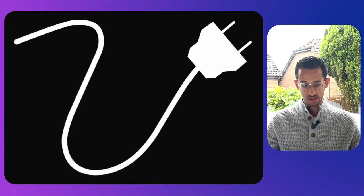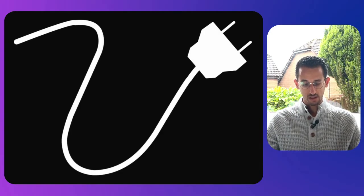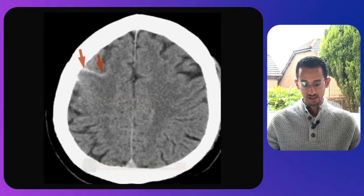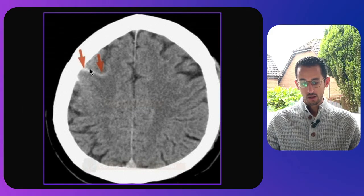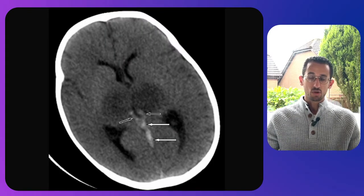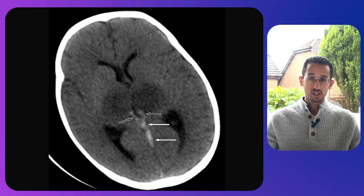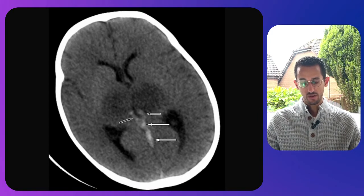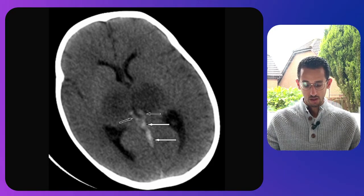Moving to the next one — this resembles a cord sign. The cord sign can be seen in brain imaging in the form of thrombosed cortical veins. On this CT scan you can see something that looks like a cord at the top, which is basically a thrombosed cortical vein. This can also happen in deeper venous structures, as you can see in this CT scan showing thrombosis and opacification within the deep venous sinuses of the brain.